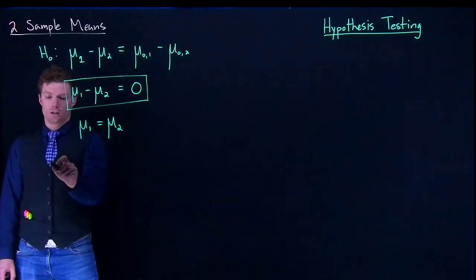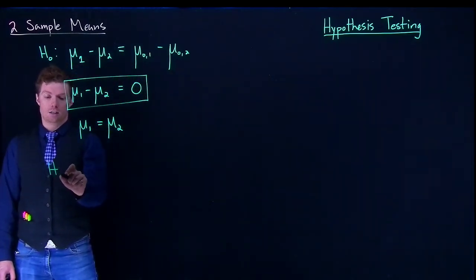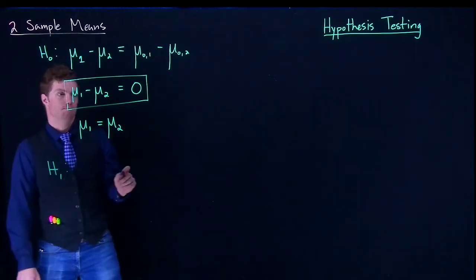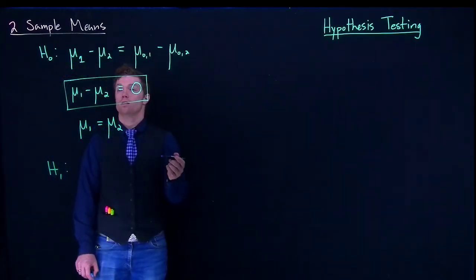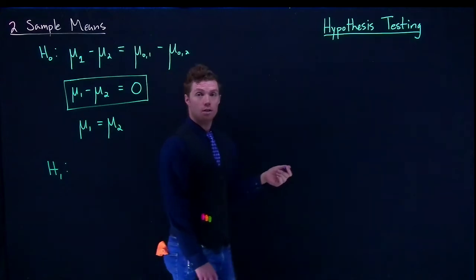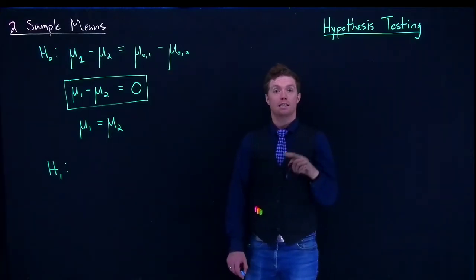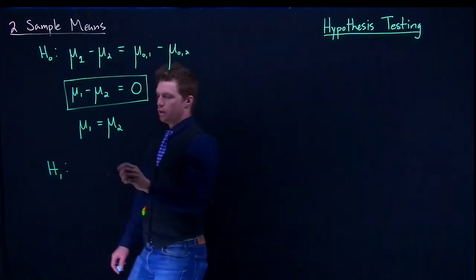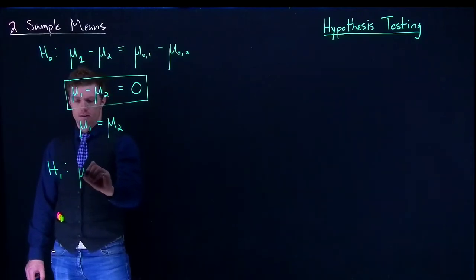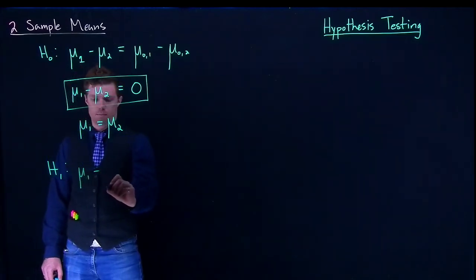And then our alternative hypothesis, it's nice because the pattern stays the same where the null hypothesis and the alternative hypothesis are identical, except for the inequality. So here we'll have that mu1 minus mu2.